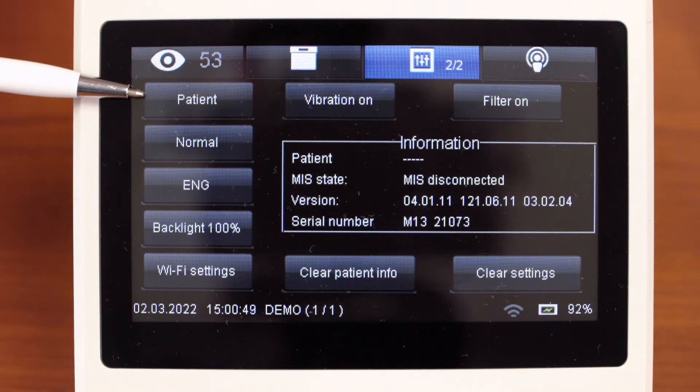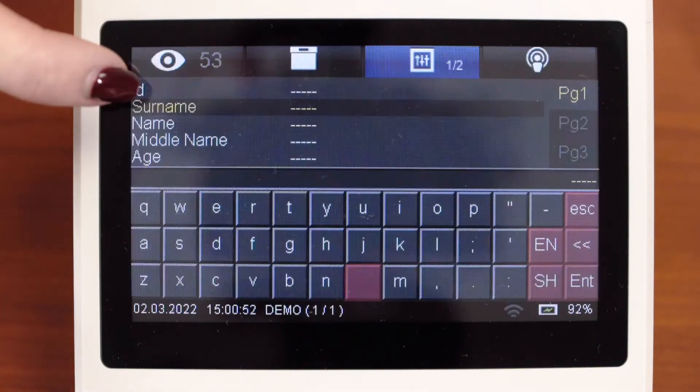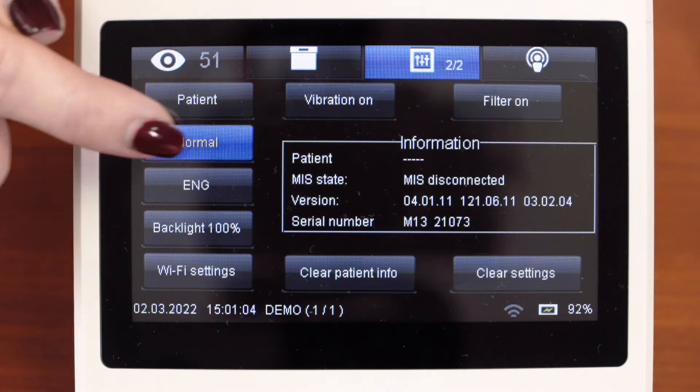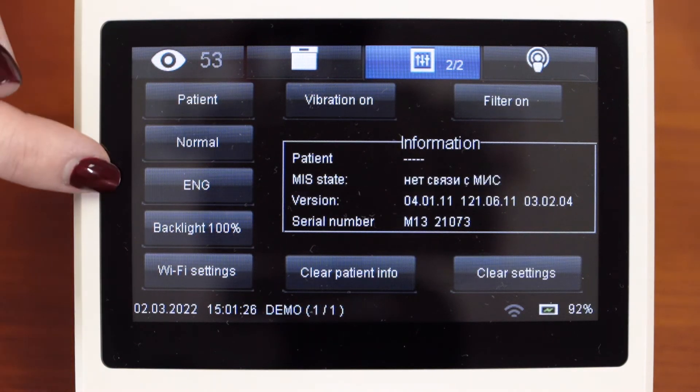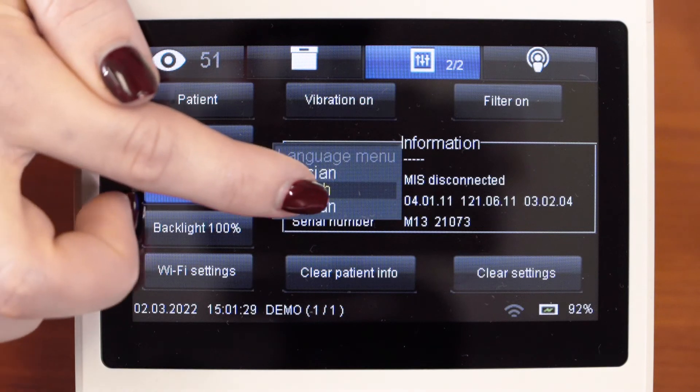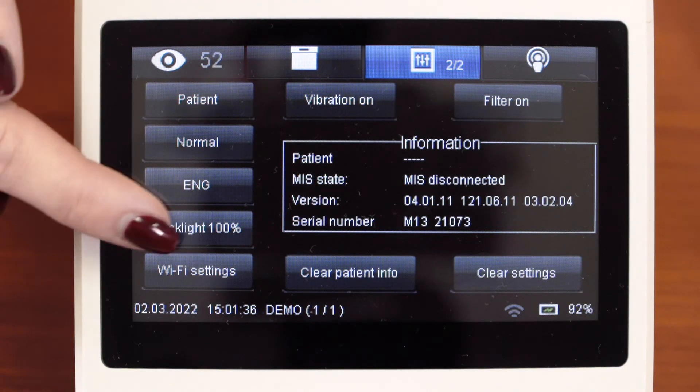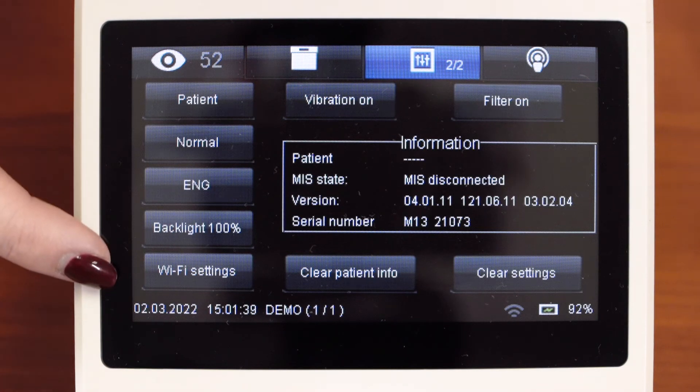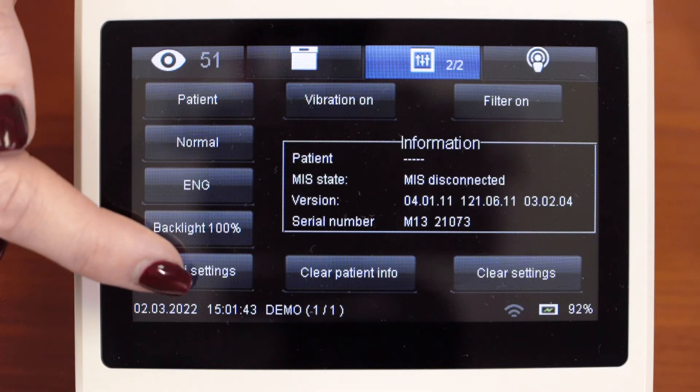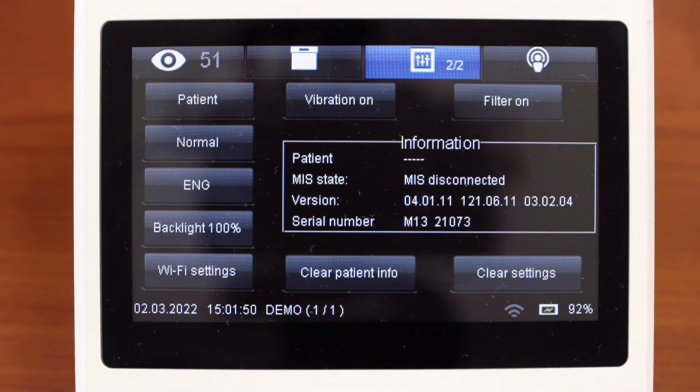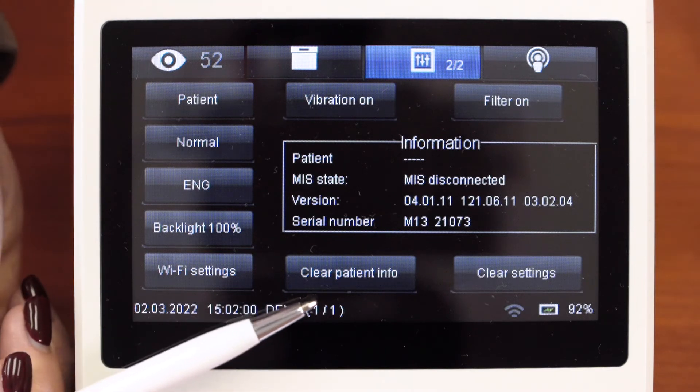Here you can set the information about patient. Here you can turn on normal or demo mode. Here you can choose the language. Here you can set the brightness of display. Here you can use Wi-Fi connection. Also you can turn on vibration of device and power filter. Here you can clear settings and clear patient info.